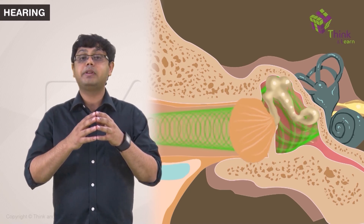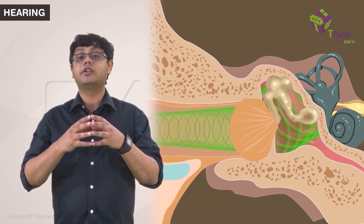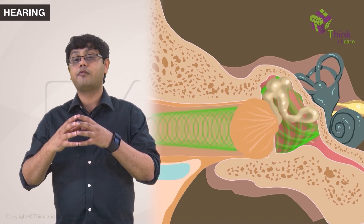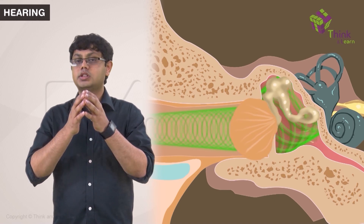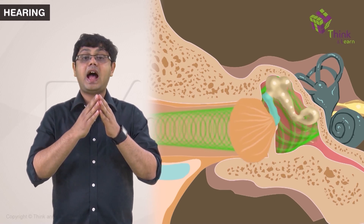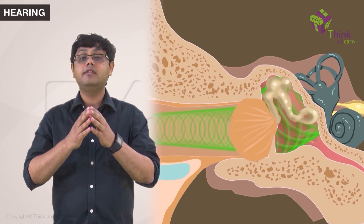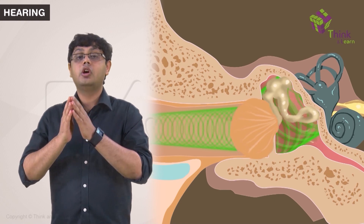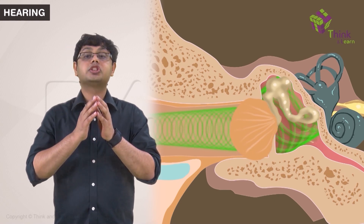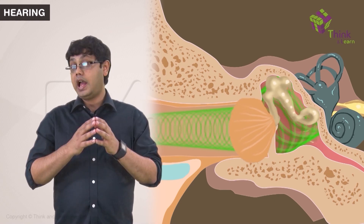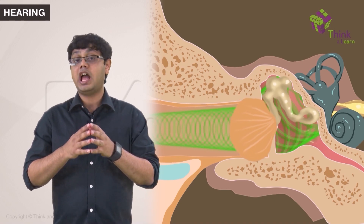With more energy applied over a smaller surface area, there is greater force. Similarly, the malleus acts as a lever to amplify the force with which the ossicular chain vibrates.